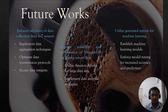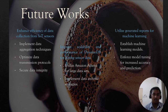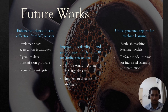Certain data will be shown to certain users according to IAM rules. The third future work is to utilize generated reports for machine learning. We are about to use AI as part of machine learning. The machine learning needs data to train itself and then produce the desired output. We also need to use model tuning to increase the accuracy and prediction of the machine learning. That's all for the future works.